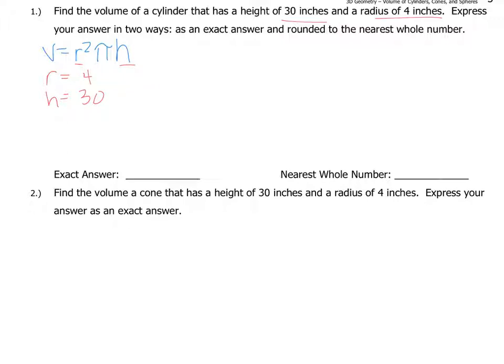So now we just plug those in to the formula. So the volume is 4 squared times pi times 30. So we're going to take 4 squared, which is 16, and then we're going to multiply it by 30. So now I have 480 pi.